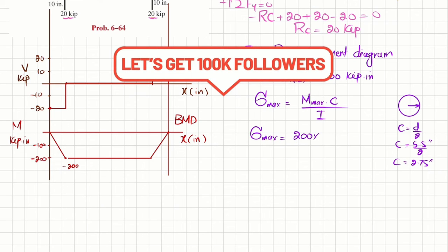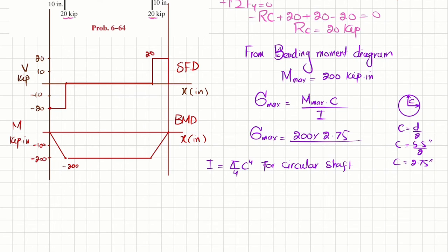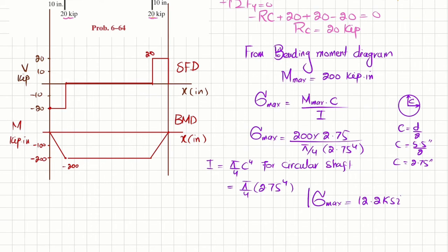The maximum bending stress = M·c / I = 200 × 2.75 / I. For a circular cross-section, I = (π/4)·c⁴ = (π/4)×(2.75)⁴. Substituting: maximum bending stress = 200 × 2.75 / [(π/4) × (2.75)⁴], which gives a maximum bending stress of 12.2 ksi. That is the answer using Method 1.